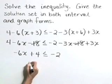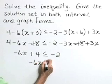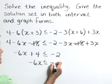If we subtract 4 from both sides, then -6x is less than or equal to -6.